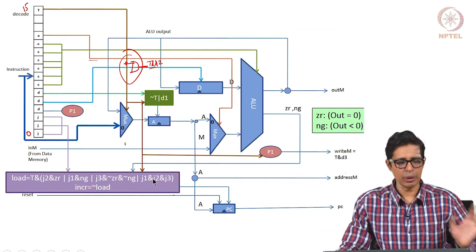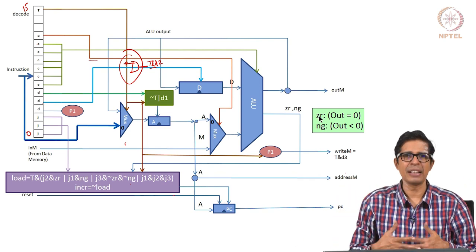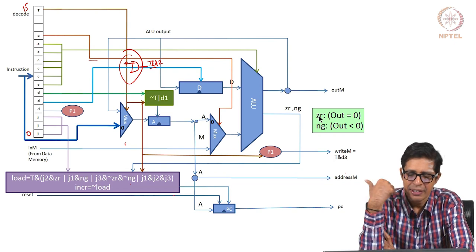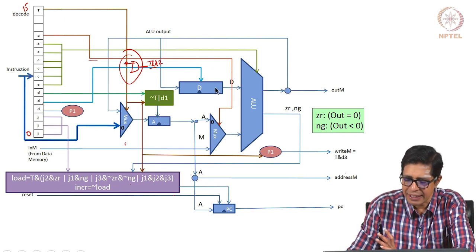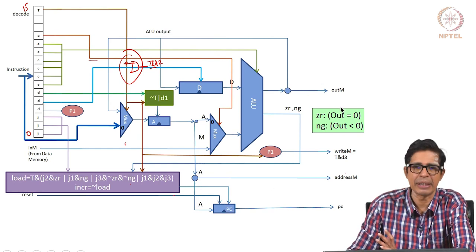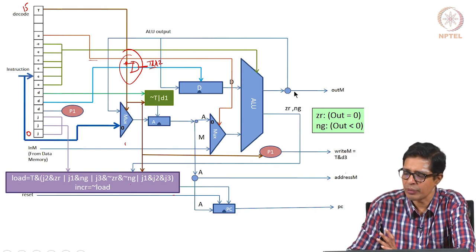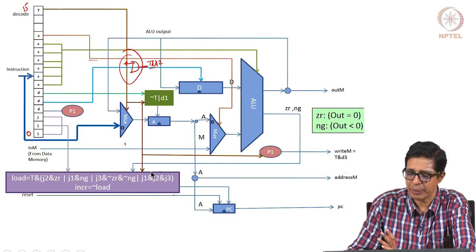This is the architecture explained in the previous module. It has a D register, A register, PC, and memory. The state of the architecture is defined by the storage elements. Between instructions, we store the A register, D register, program counter, and whatever is in the memory. Memory is controlled by writeM and outM — if writeM is 1, data is stored at the address given by the A register.